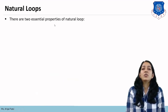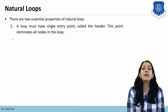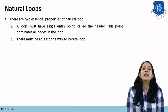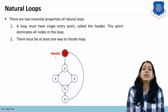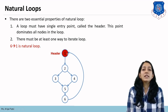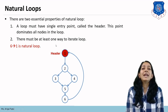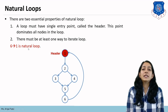Next are natural loops. A natural loop has two essential properties: it must have a single entry point called the header, which dominates all nodes in the loop, and there must be at least one way to iterate the loop. In the example graph, node 1 is the header. The edge 6→1 forms a natural loop because node 1 is the single entry point dominating all loop nodes, and 6→1 provides the iteration path.